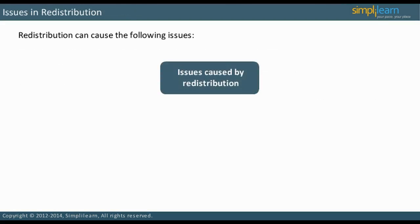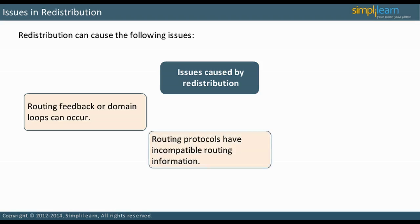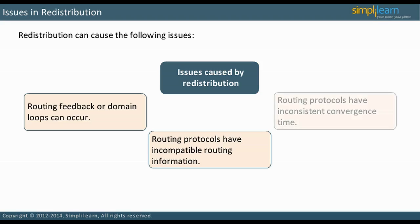Issues caused by redistribution are as follows. Routing feedback, also called domain loops, can occur — this will be discussed in detail under multipoint redistribution. Routing protocols have incompatible routing information; each protocol uses different metrics to determine the best path, which cannot be translated exactly, and may lead to sub-optimal paths. Different routing protocols converge at different rates — for example, RIP converges more slowly than EIGRP, so if a link goes down, the EIGRP network learns about it before the RIP network. Note that redistribution adds to a network's complexity and should be used only when necessary.